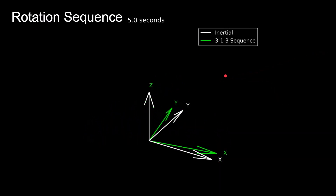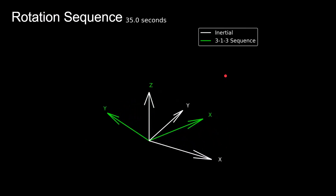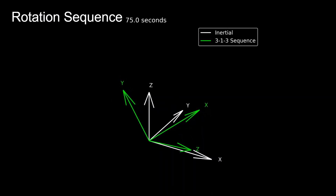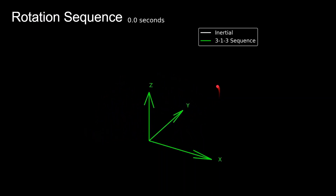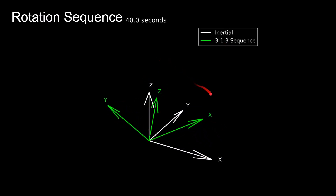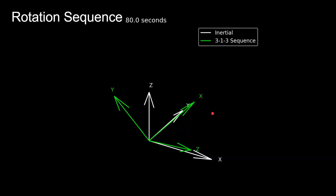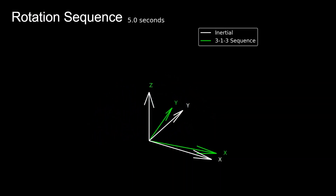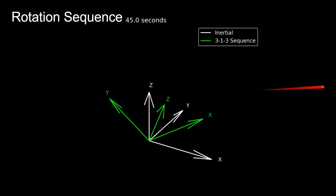This is actually how Keplerian orbital elements are defined. The three angles describing the orientation of an orbit with respect to the inertial frame form a 3-1-3 Euler angle sequence: the first rotation about the Z axis is the right ascension, the second rotation about the X axis is the orbital inclination, and the third rotation about the Z axis is the argument of periapsis. This will be covered in more detail in a future video.